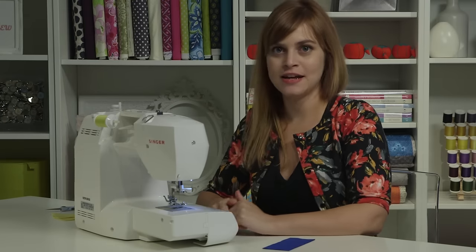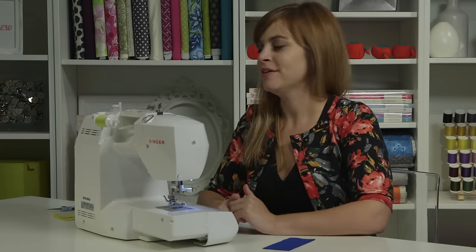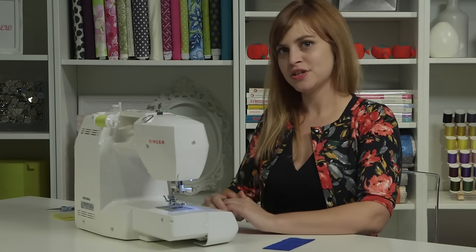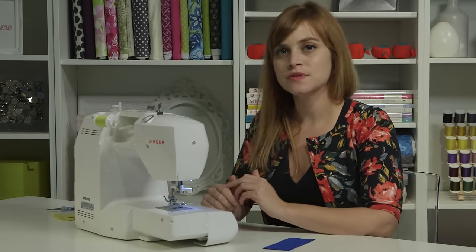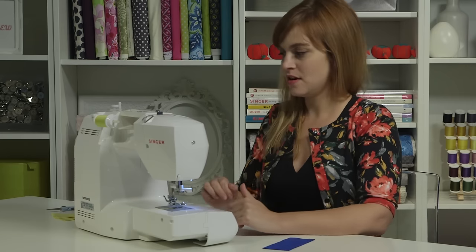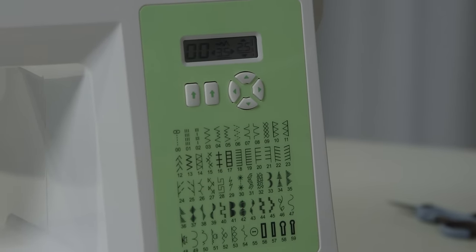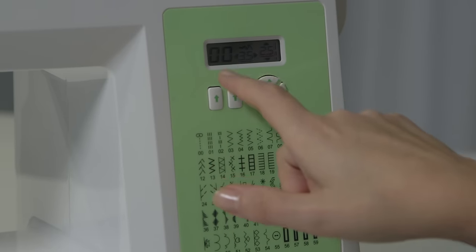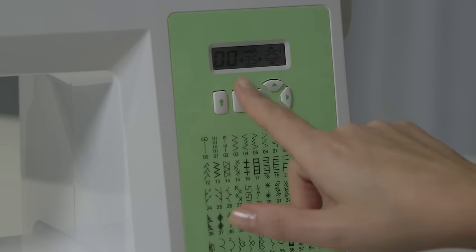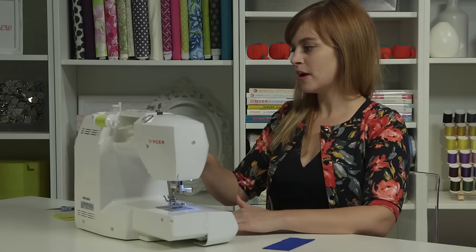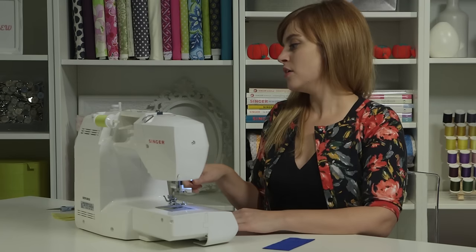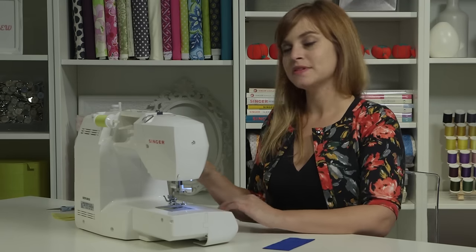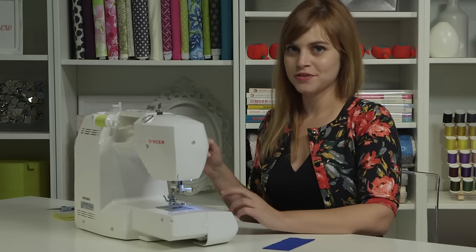Now that we've threaded our machine, it's time to do a little test sewing and make sure we've threaded it correctly. For our test seam, we're going to choose a regular straight stitch. This is a common stitch for sewing seams, so it's a good one to use as a test. Our straight stitch is stitch number 00, and you can select your stitch by using these arrow buttons until the stitch number right here reads 00. Your length and width settings will be set automatically for you, so you don't have to worry about it.